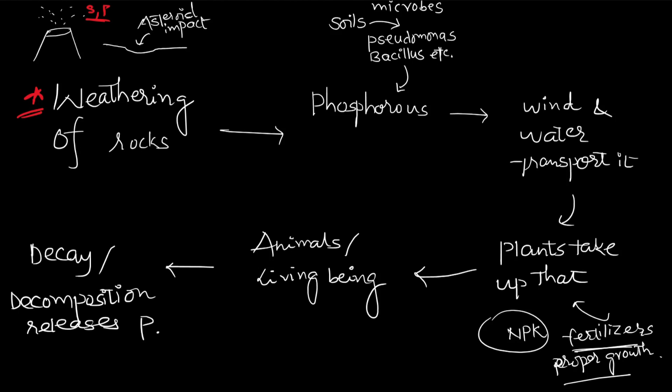Soil constituents are also converted into phosphorus via microbes such as Pseudomonas and Bacillus, along with other microbes. So weathering of rocks, volcanic eruption, asteroid impact, and soils are the main sources for the production of phosphorus.